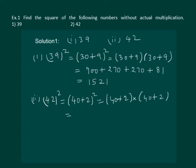40 into 40 will give us 1600. 40 into 2 will give us 80. Then 2 into 40 will give us 80. 2 into 2 will give us 4. On adding we get 1764.